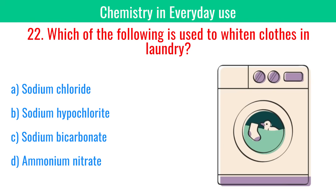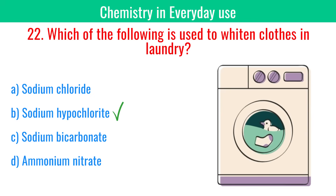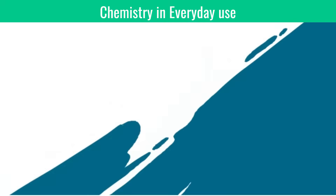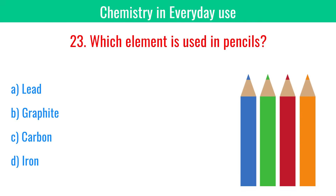Which of the following is used to whiten clothes in laundry? Sodium hypochlorite. Which element is used in pencils? Graphite.